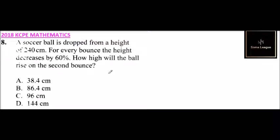If it was dropped from 240 centimeters and the bounce decreased by 60 percent, it means the rise was 40 percent, that is 100 minus 60. So the first bounce will be 240 divided by 100 and multiplied by 40. When you multiply that, you get 96 centimeters.